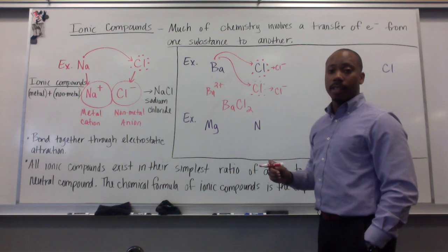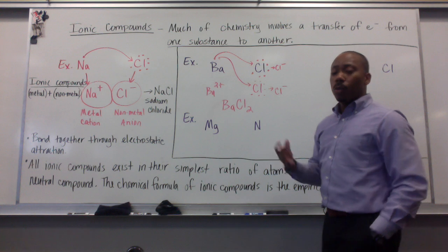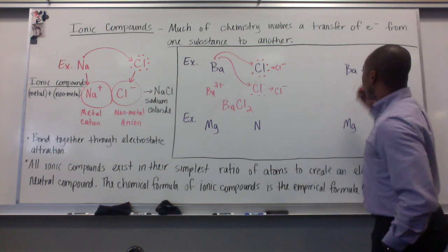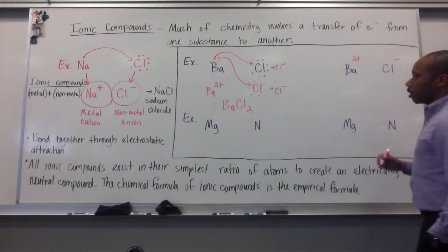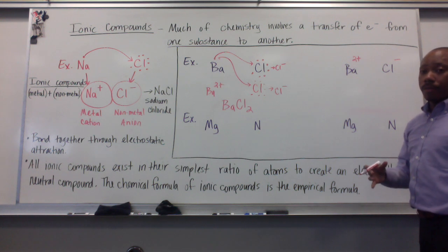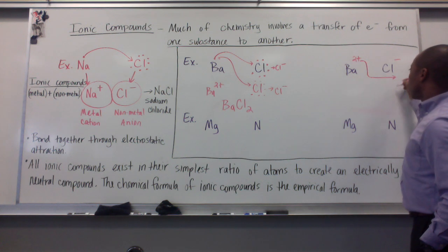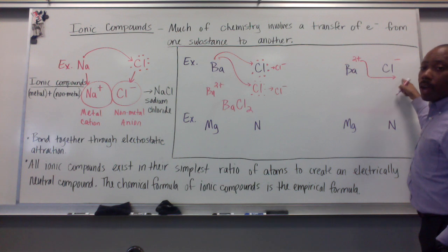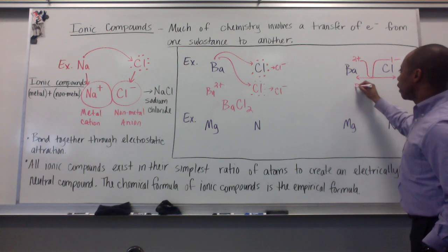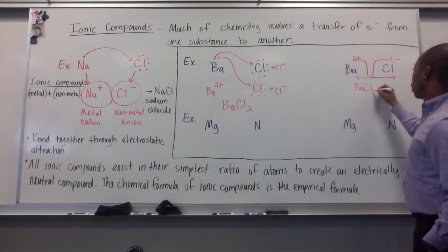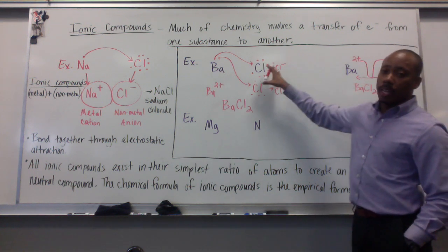You couldn't just have one chlorine there because the barium charge wouldn't be canceled out. We can think of this in a much simpler way. Barium, you know it's going to form a two plus charge. You know chlorine is going to form a one minus charge. We can use a method called the crossover method, where the ionic charge becomes the subscript for the other atom. This ionic charge is one. It becomes a subscript for the other atom, so we get Ba1Cl2. That's a very quick way of doing that.